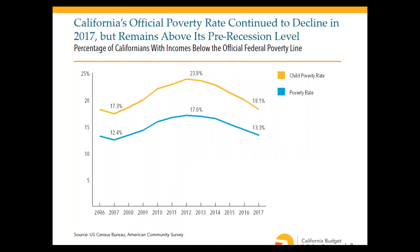Under the official poverty measure, poverty is a significant problem in California. California's official poverty rate continued to decline in 2017, but it's still above the level before the Great Recession. As of 2017, about 13 percent of Californians were living in poverty under this measure.